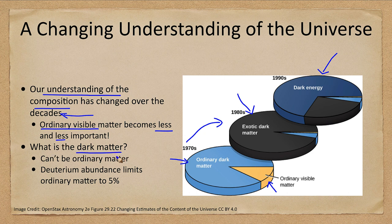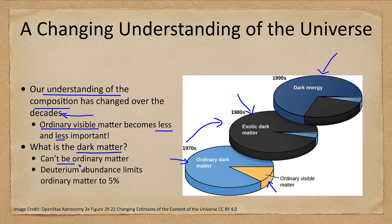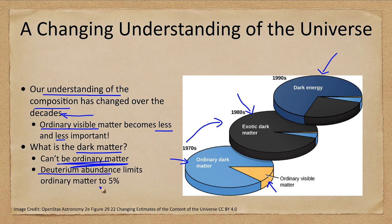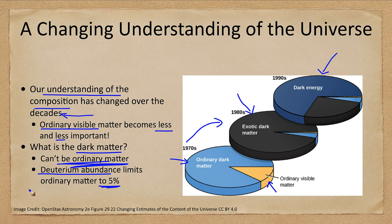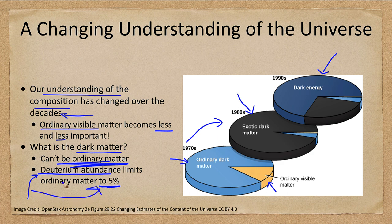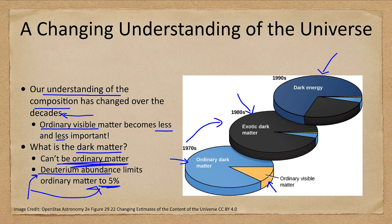Now what is the dark matter? It cannot be ordinary matter. We've been able to rule that out because the deuterium abundance limits what the amount of ordinary matter could be. That tells us about what formed in the early history of the universe and during the Big Bang, and that means no more than 5% of the matter can be the ordinary type of matter.